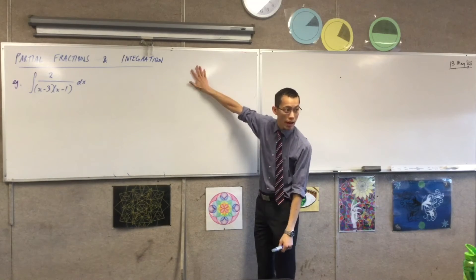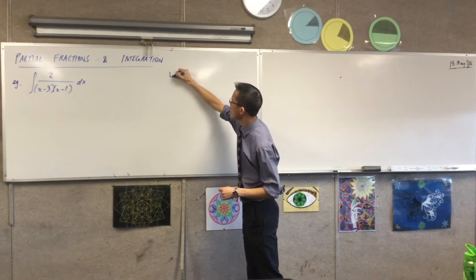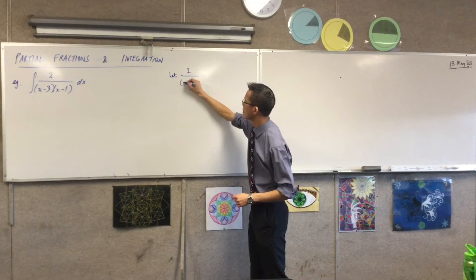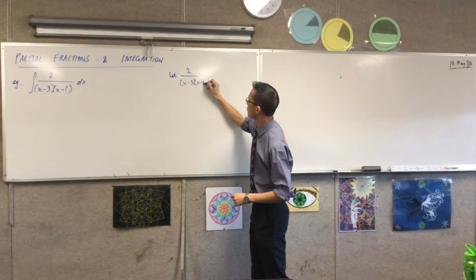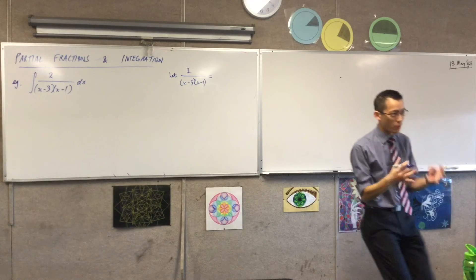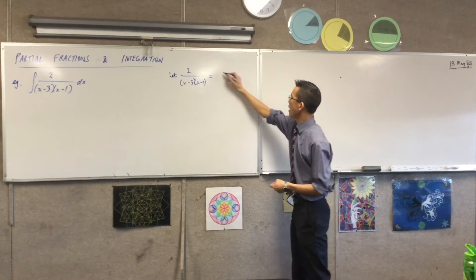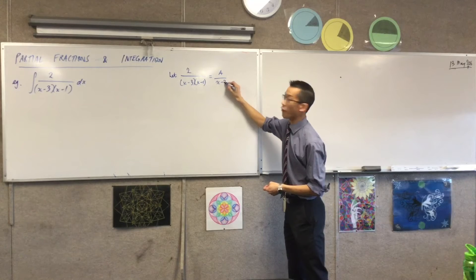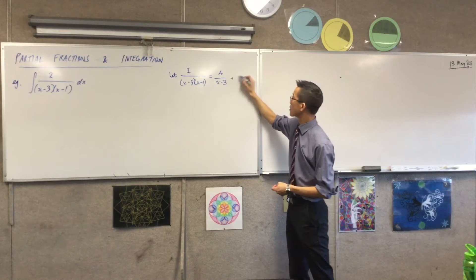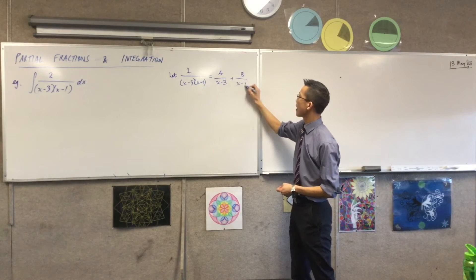We're going to need, and you can do this over on the right-hand side first. I'm going to say, let two on this fraction here equal to, can we remember how does partial fractions work? What are we going to use on the right-hand side? A on the first factor, plus B on the other factor.